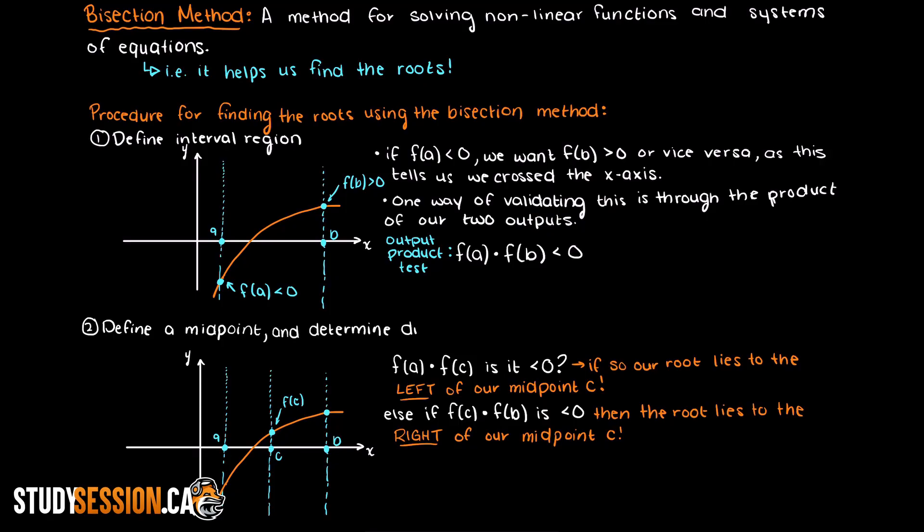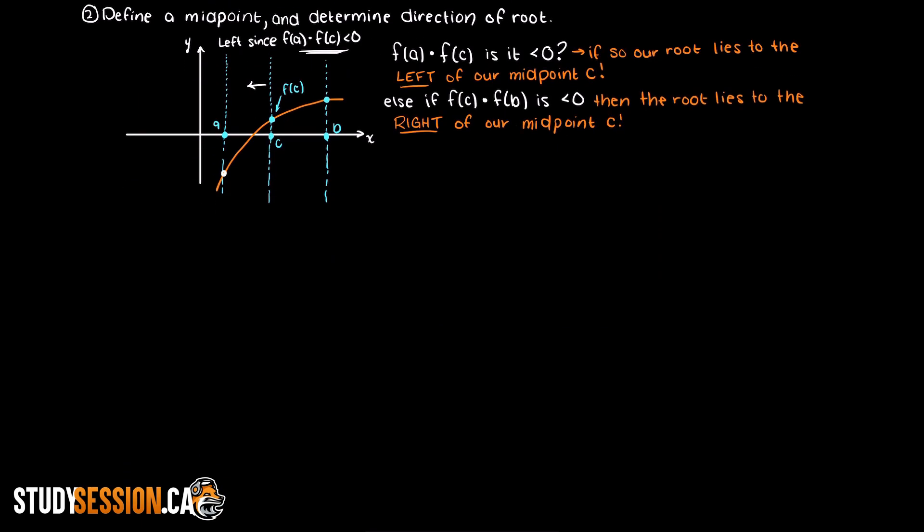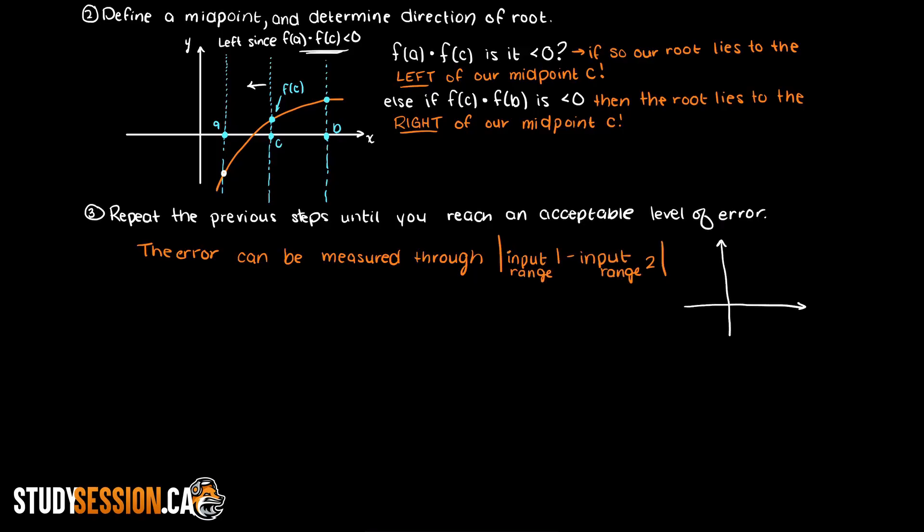And that is really all there is to the bisection method. We just need to continue to cut our input range in half, determine which side's output is less than zero, and then repeat this process until we find an acceptable level of error. You can measure the error through the absolute input of range 1 to range 2, as we know that our root will lie somewhere within this region, we're just not sure where.